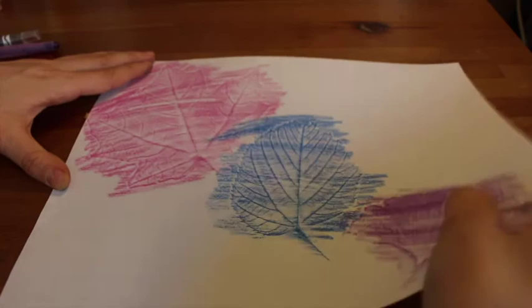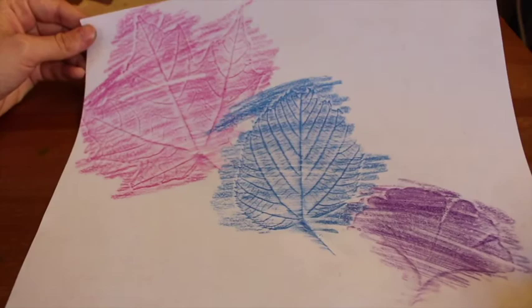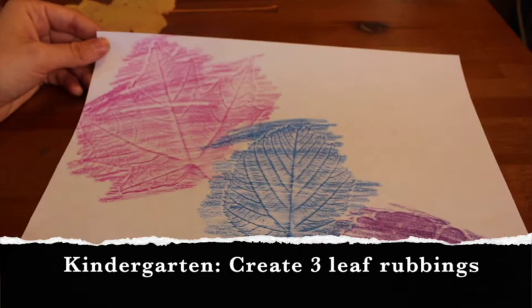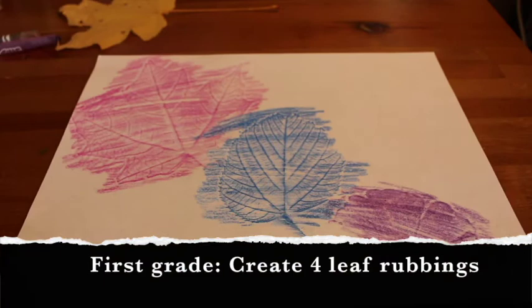Ta-da! Look at my finished leaf artwork. Look at all of those different textures that I created. So boys and girls, if you are in kindergarten, I want you to create three leaf rubbings. You can do more if you'd like.